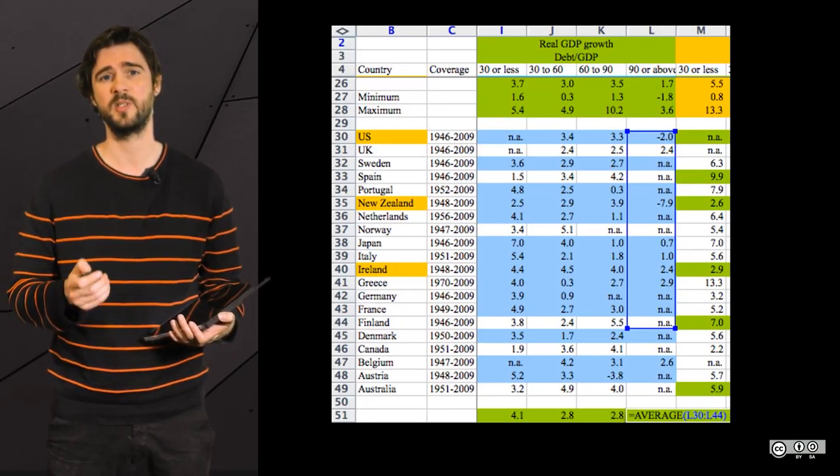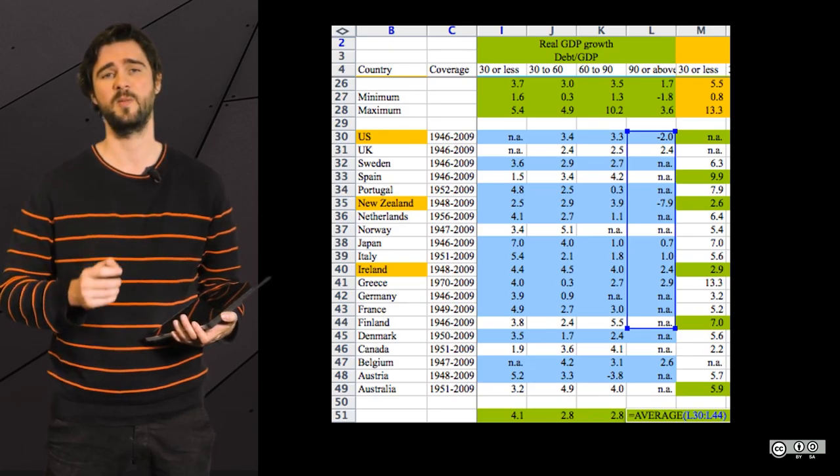Sharing the code is also a best practice. In the case of Reinhardt and Rogoff controversy, it allowed to detect issues in an Excel formula.